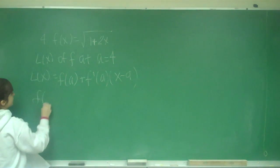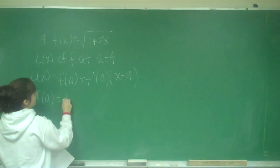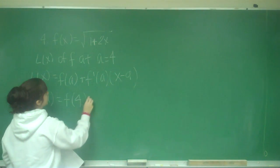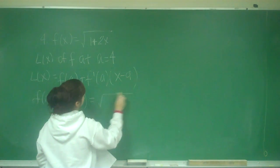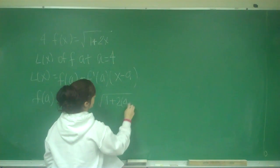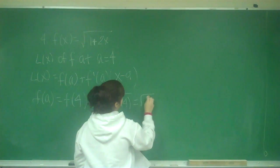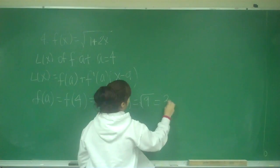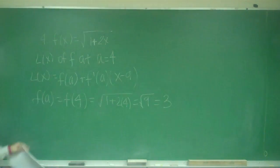So f(a) equals f(4) because they told us that a was 4. So we have the square root of 1 plus 2 times 4. So that's the square root of 9, which is equal to 3.